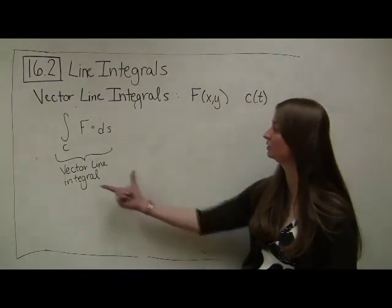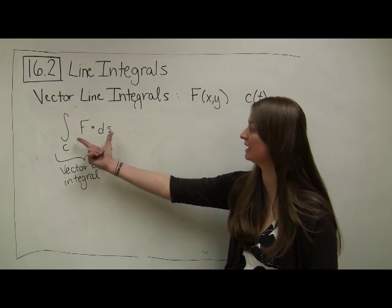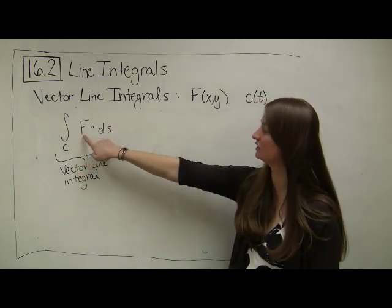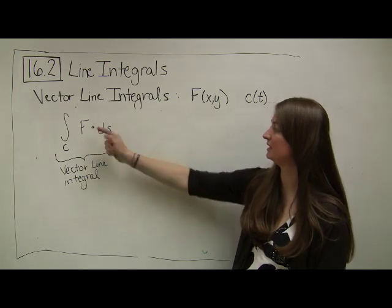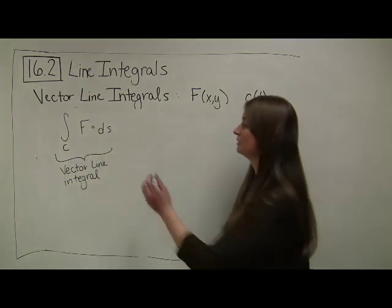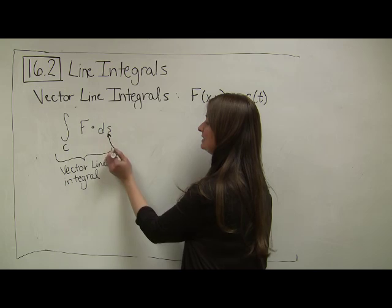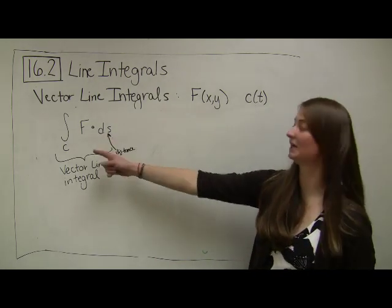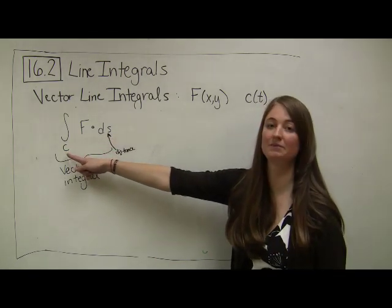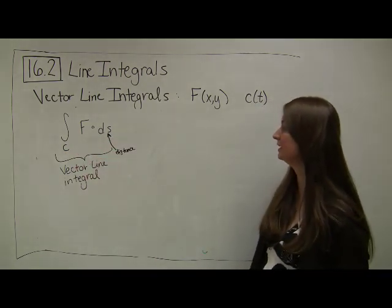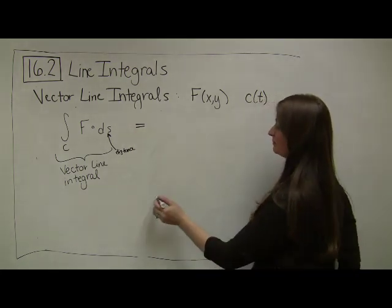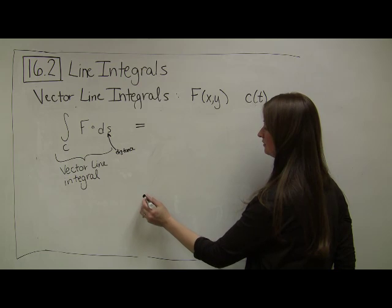So my vector line integral, our generic way of writing that is to say that my path is given by C, and my vector field is given by F, and I'm dotting it with DS. Notice that I'm parameterizing this by distance, rather than time. And we're going to have to switch that, because our C parameterization, we want to be able to compute it in terms of time.